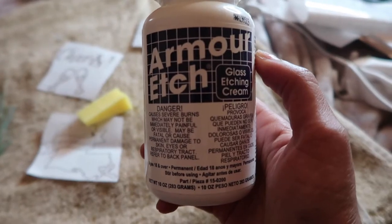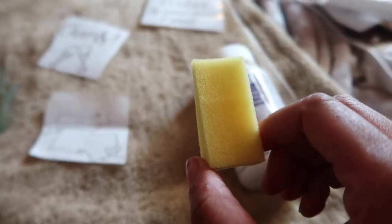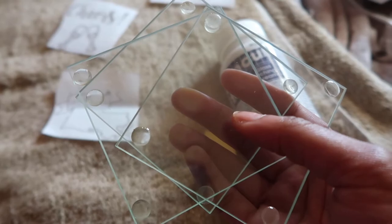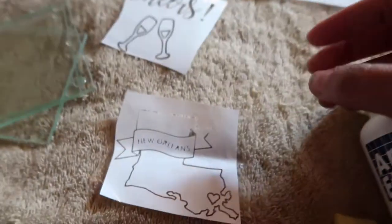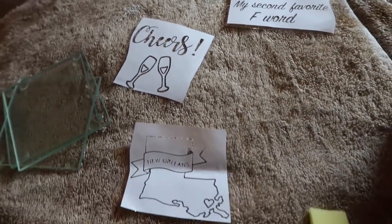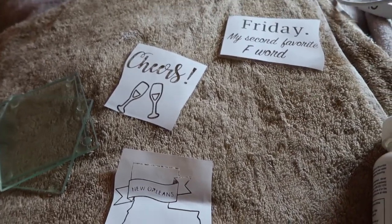For this project you're going to need armor etching cream, a sponge, your coasters or any other glass thing you plan on using, as well as your templates. I printed mine off of my Cricut machine, so if you want to know how I do that, just leave a comment down below.